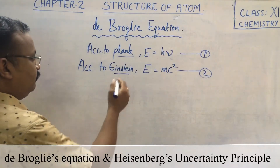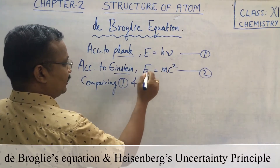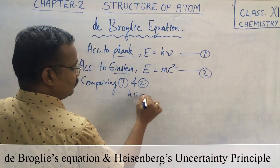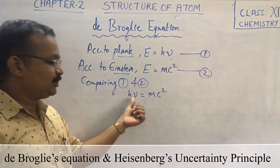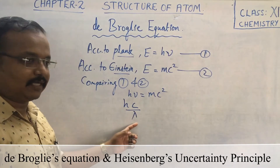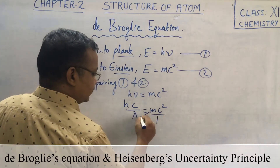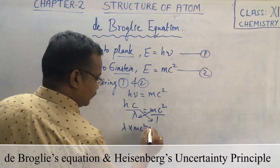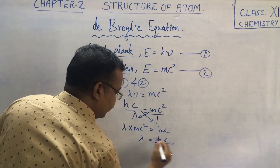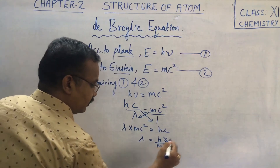Comparing equations 1 and 2: since the left-hand side is the same in both, we can write H nu is equal to mc squared. Now, nu is equal to c divided by lambda, so substituting, H times c over lambda equals mc squared. Cross-multiplying, lambda into mc squared equals Hc, therefore lambda equals Hc divided by mc squared.